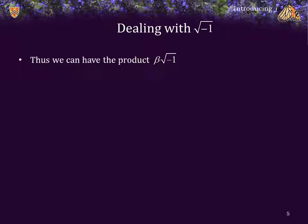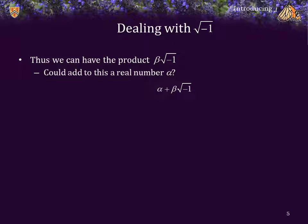So now we know we can have this product beta times the square root of negative 1, where beta is any real number. Could we add to this a real number alpha? That is, could we have something of the form alpha, where alpha is real, plus beta times the square root of negative 1? Well, not sure why not. After all, given any variable x, we can always add alpha to beta times x. The only difference here is that x now is the square root of negative 1.